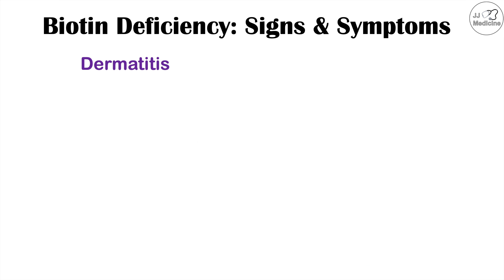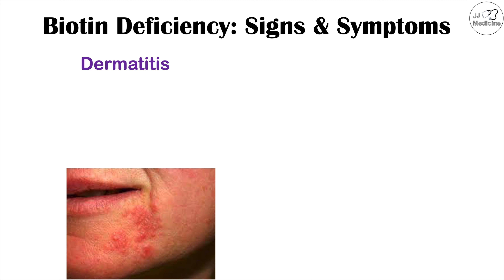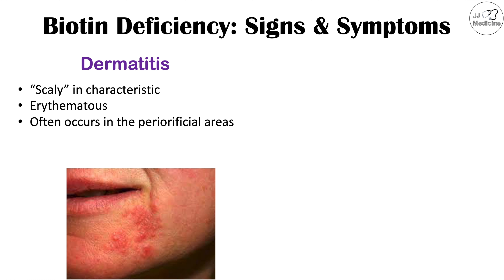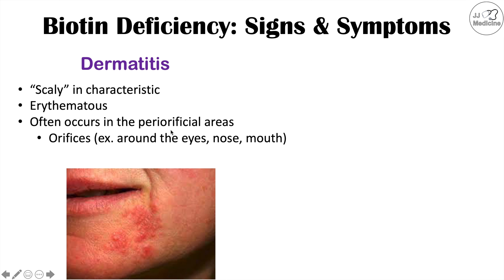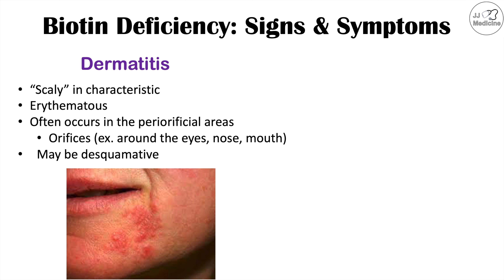Another important early sign is dermatitis with a characteristic appearance — often described as scaly and erythematous, meaning reddened. This rash occurs in the periorificial areas, which are areas around the orifices — specifically around the eyes, nose, and mouth. An image of this periorificial dermatitis can be seen here. This dermatitis may also be desquamative, meaning it can dry out and slough off over time.